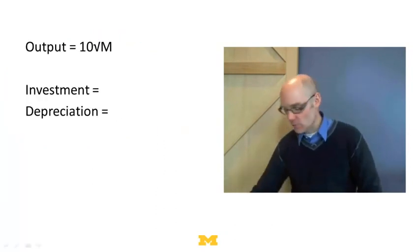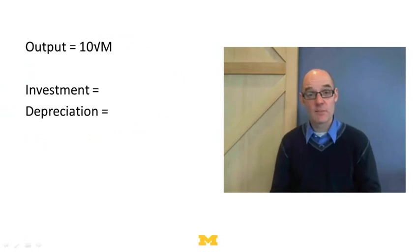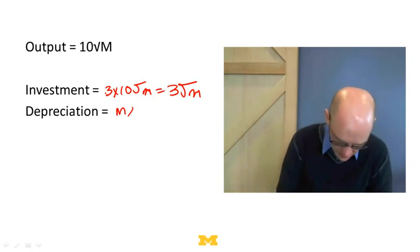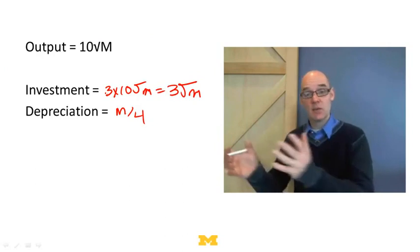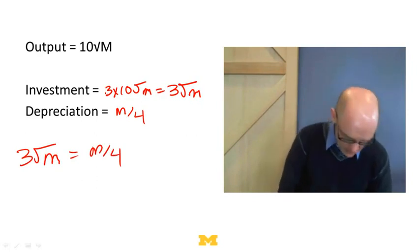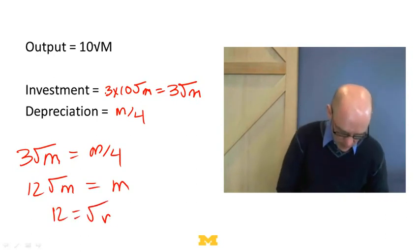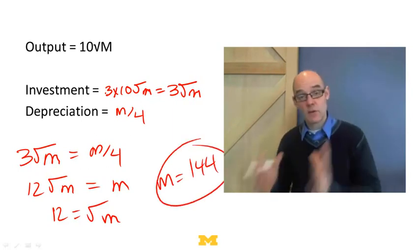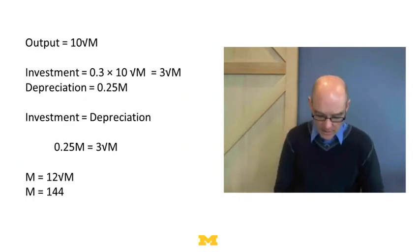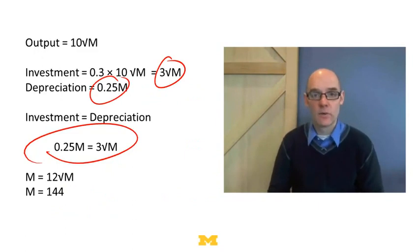That's easy to solve — this is why models are so great. Our output is 10√m. Investment is 0.3 × 10√m = 3√m. Depreciation is m/4. In equilibrium, depreciation equals investment, so: 3√m = m/4, which means 12√m = m. Dividing both sides by √m gives 12 = √m, so m = 144. If the total number of machines is 144, depreciation exactly equals savings. The investment is 3√m, depreciation is 0.25m; set those equal, solve, and get 144 machines.